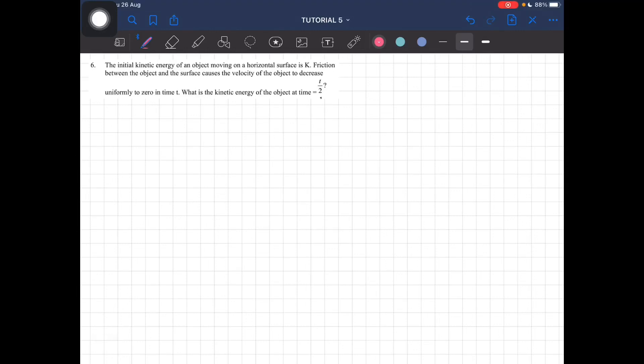Okay, question 6. The initial kinetic energy of an object is k. Friction between the object causes the velocity to decrease uniformly to 0 in time t. So what is the kinetic energy of the object at time half t?